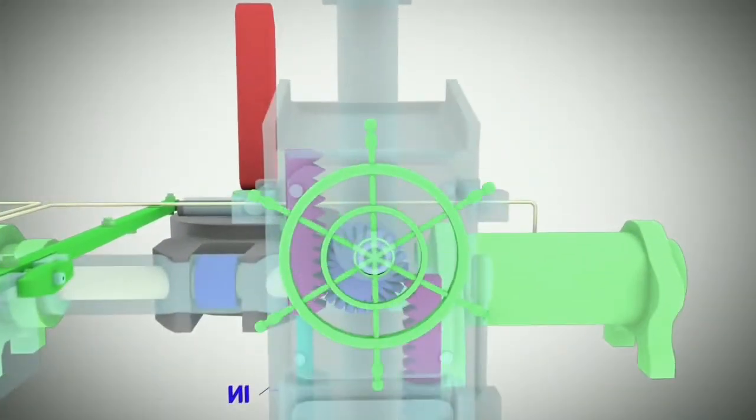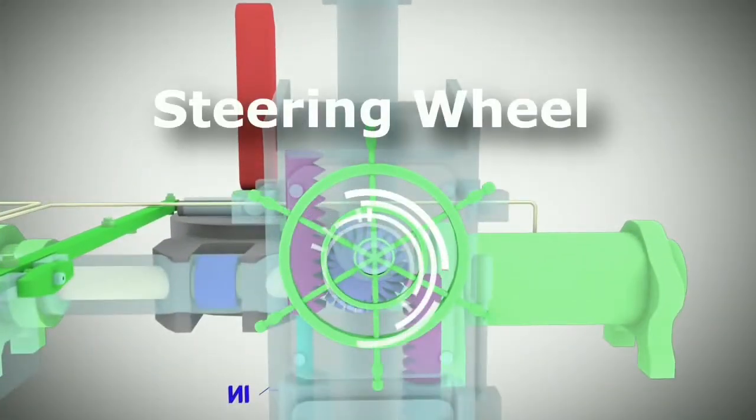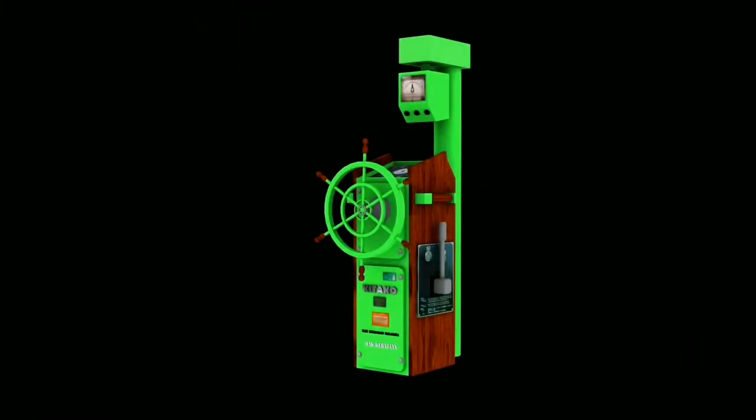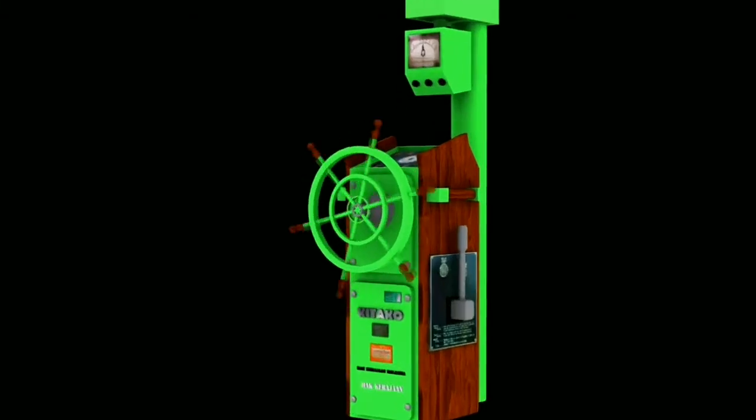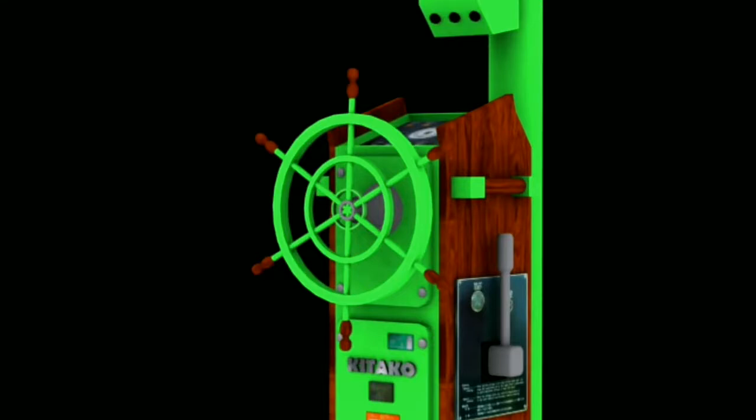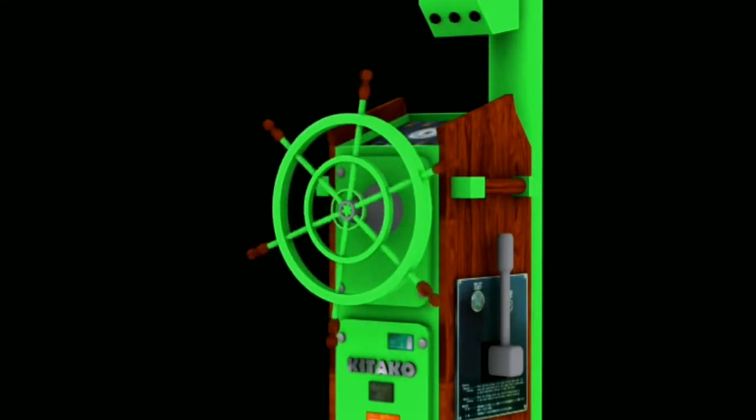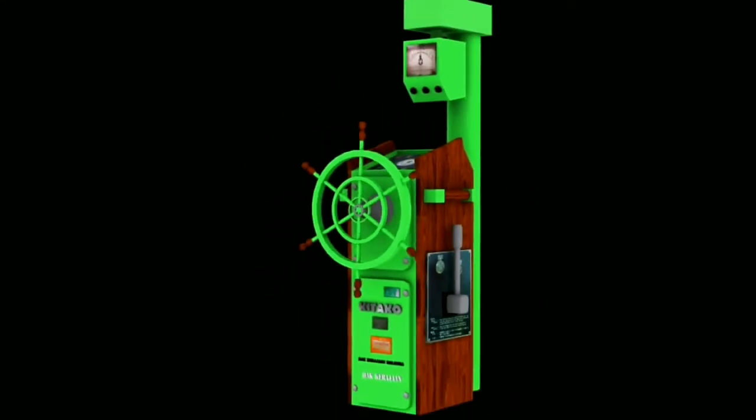Steering Gear. A steering gear is the equipment provided on ships to turn the ship to left port side or to right starboard side while in motion during sailing. The steering gear works only when the ship is in motion and does not work when the ship is stationary.